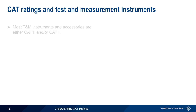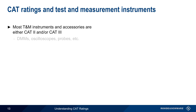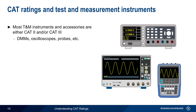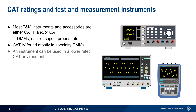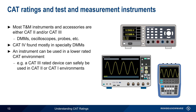Most test and measurement instruments and accessories are either CAT 2 and/or CAT 3. This includes digital multimeters, benchtop and portable oscilloscopes, probes, etc. CAT 4 is generally found only in some specialty DMMs designed for higher voltage work. Note, however, that an instrument with a given CAT rating can be used in lower CAT environments. For example, a CAT 3 rated device can be safely used in a CAT 2 or CAT 1 environment, assuming that the maximum rated voltage is not exceeded.